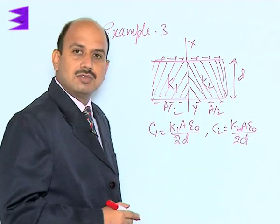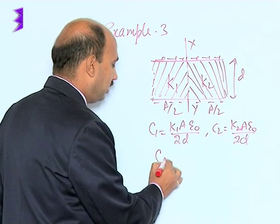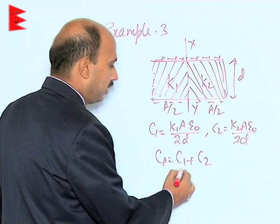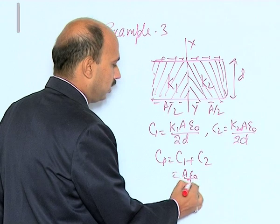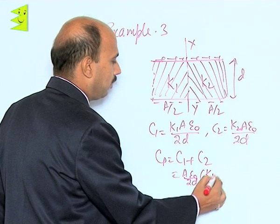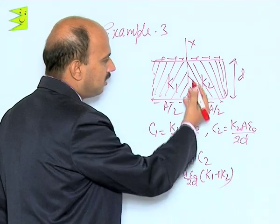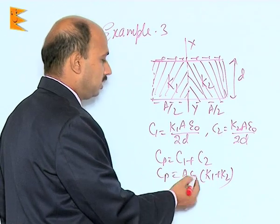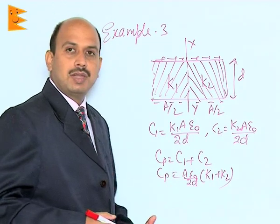These two capacitors are in parallel, so we can write Cp is equal to C1 plus C2. We can write here A epsilon naught by 2d into K1 plus K2, so in this case resultant capacitance is A epsilon naught by 2d into K1 plus K2.